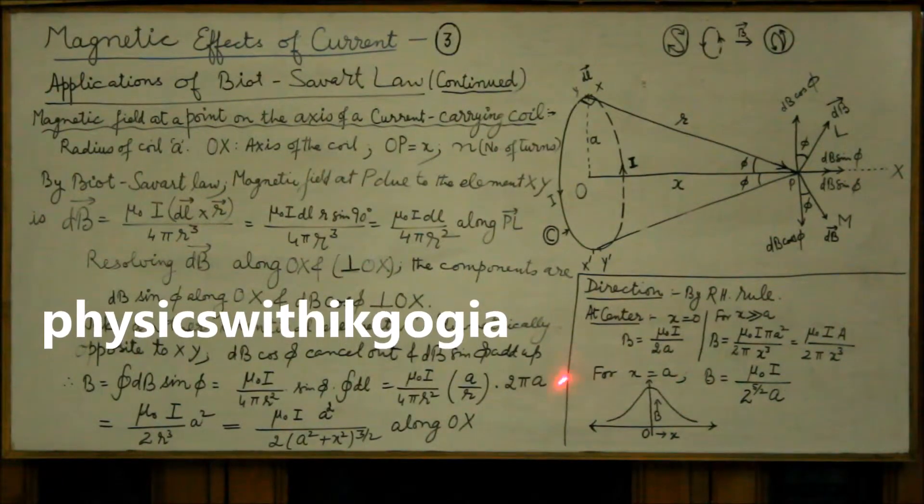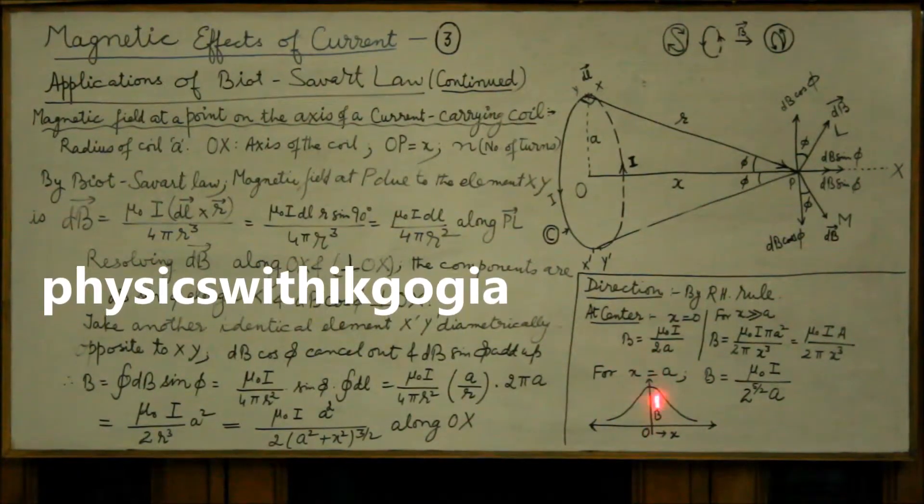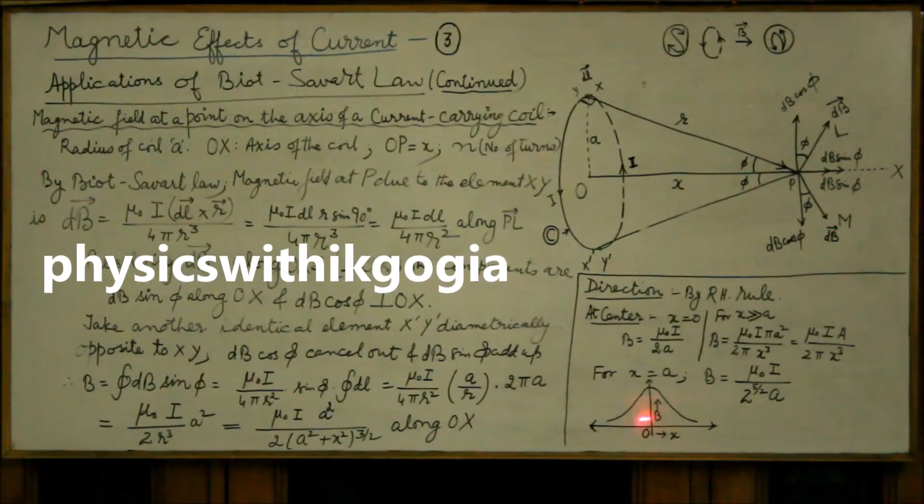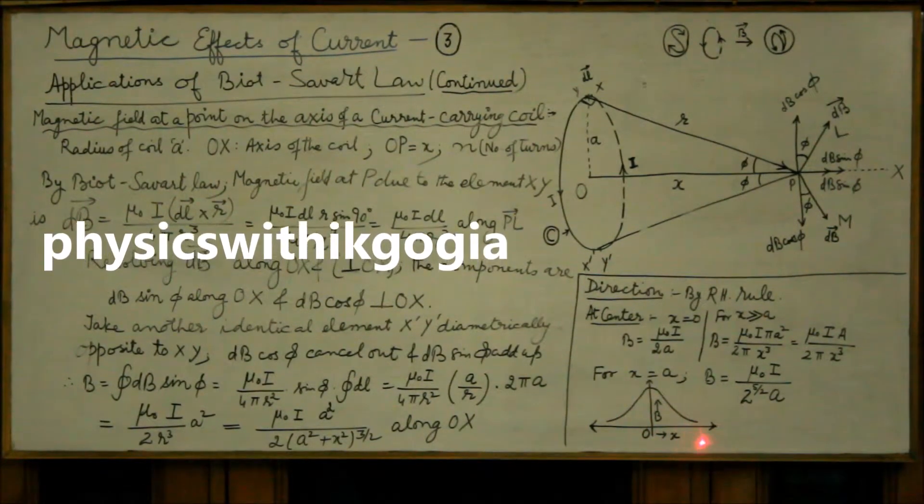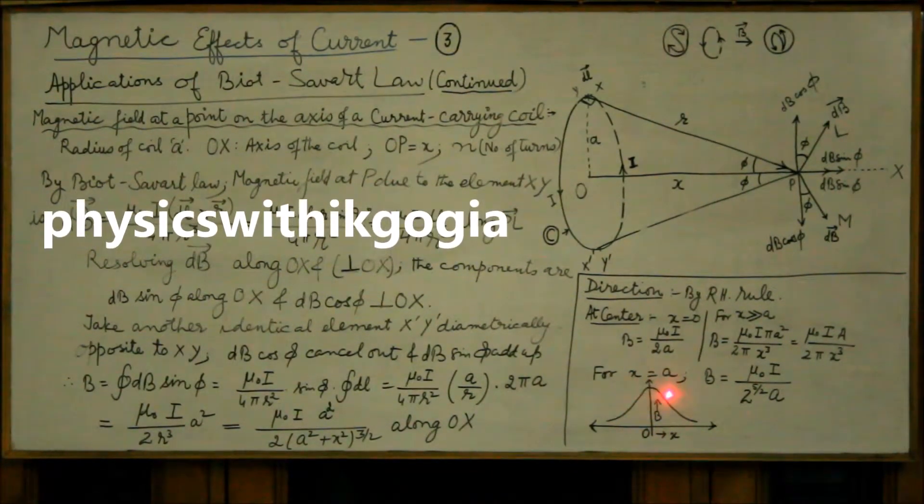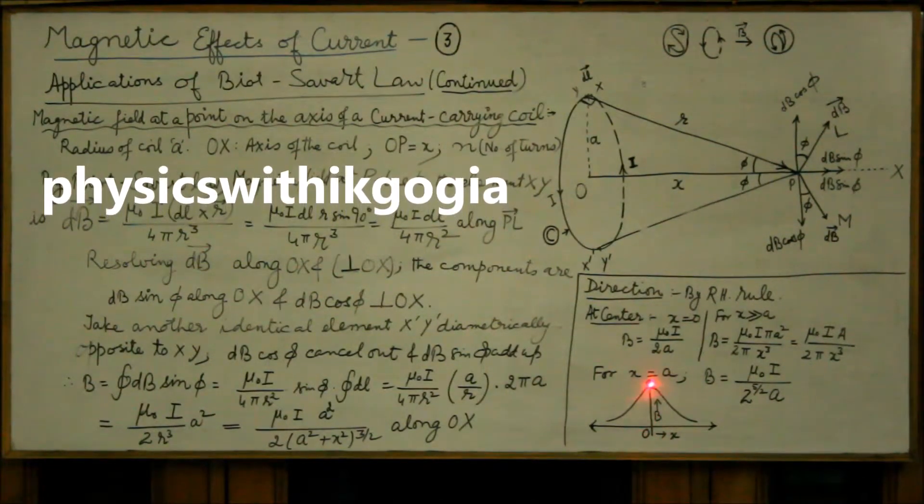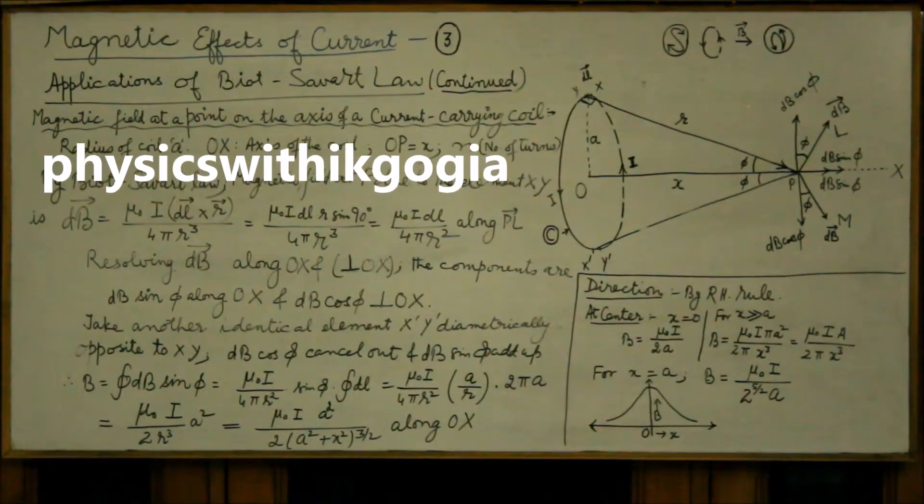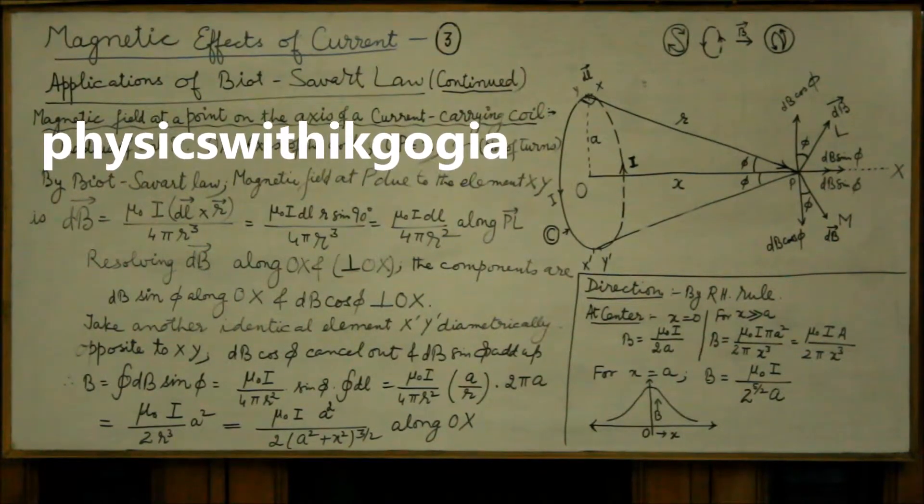This diagram, the graph shows variation of magnetic field with distance from the center of the coil. So field is maximum at the center and decreases as we move on either side of the coil.